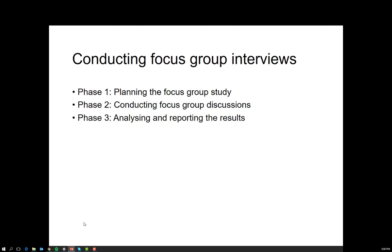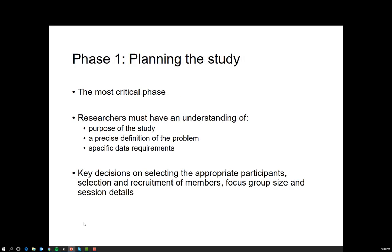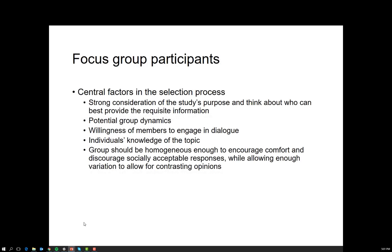There are three phases to the focus group. In planning the study, one of the key things to consider is the appropriate participant selection. In constructing a focus group, there is the need to consider the type of members to be included, the number of members, and how long the focus group should go for. In choosing participants, there is consideration about who to include and who not to include, which has follow-on effects on how many focus groups you need to conduct.